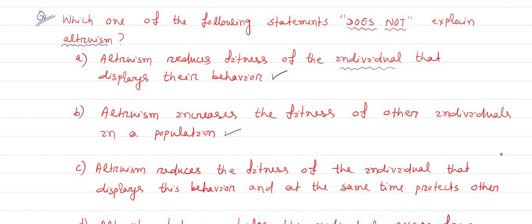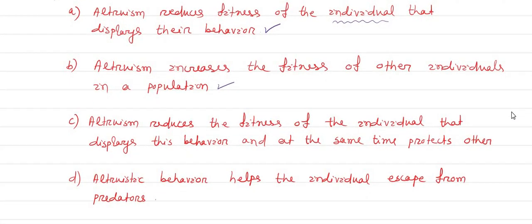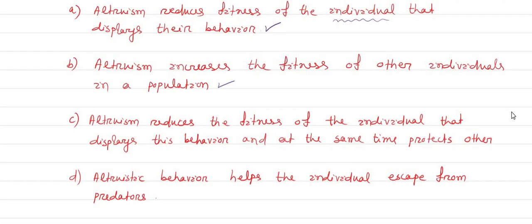Option C: Altruism reduces the fitness of individuals that display this behavior and at the same time protects others. This is also true. Altruism reduces the fitness of the individual who shows this behavior and protects others. This is also a correct statement. So these three statements are correct.